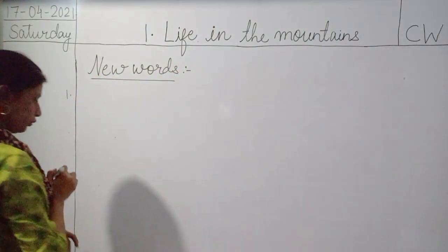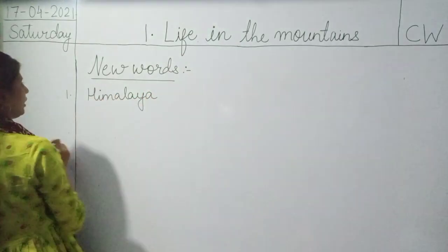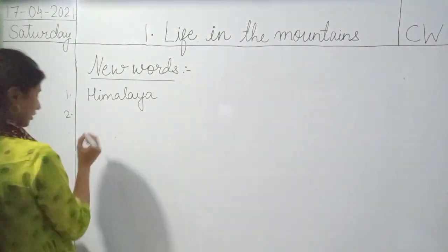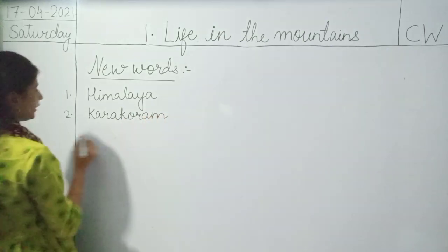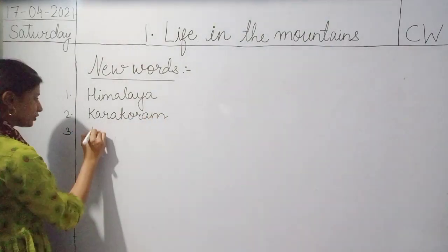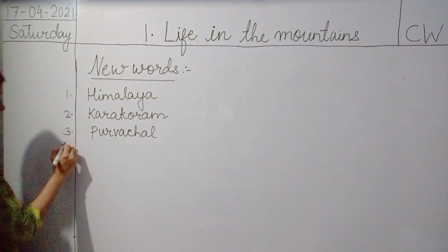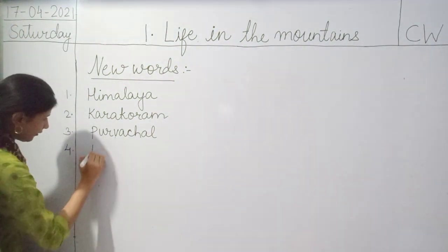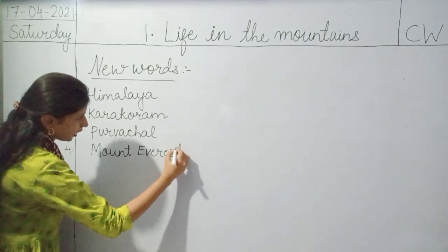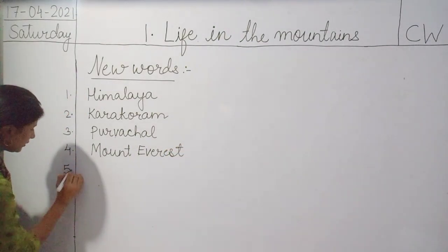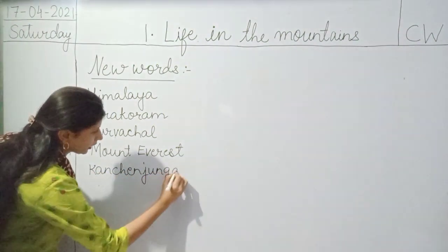The very first new word is Himalaya — H-I-M-A-L-A-Y-A. Second one is Karakoram — K-A-R-A-K-O-R-A-M. Third is Purwanchal — P-U-R-V-A-C-H-A-L. The fourth one is Mount Everest — M-O-U-N-T E-V-E-R-E-S-T. Now the fifth one is Kanchenjunga — K-A-N-C-H-E-N-J-U-N-G-A.